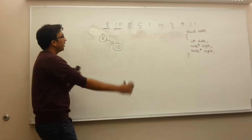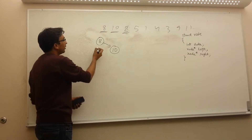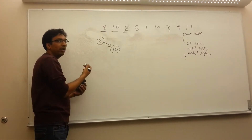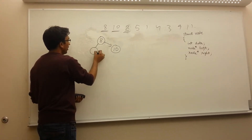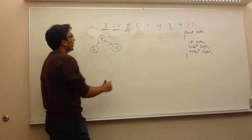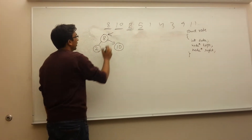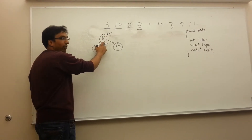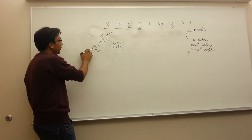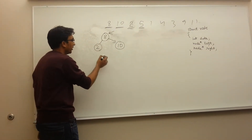The next element is 5. First, 5 is compared with the root — since 5 is smaller than the root, it goes towards the left side. Since the left side is taken, it is compared again with the left child 2. Since 2 is smaller than 5, so 5 will be towards the right side of 2.